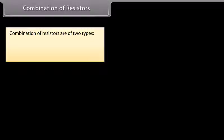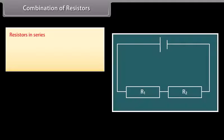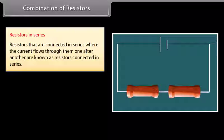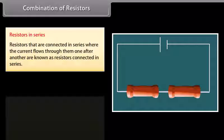Combinations of resistors are of two types: resistors in series and resistors in parallel. Resistors connected in series are those where the current flows through them one after another. Here, the current depends on the applied voltage, the number of components, and the nature of components in the circuit.